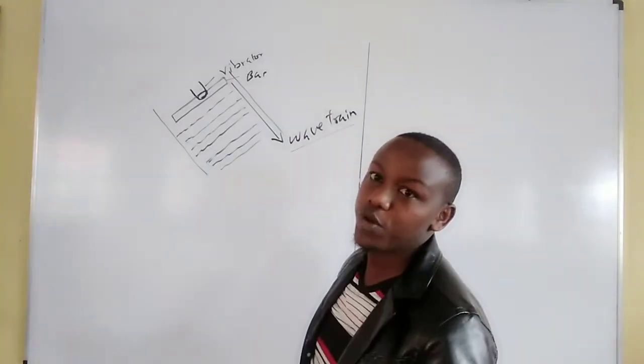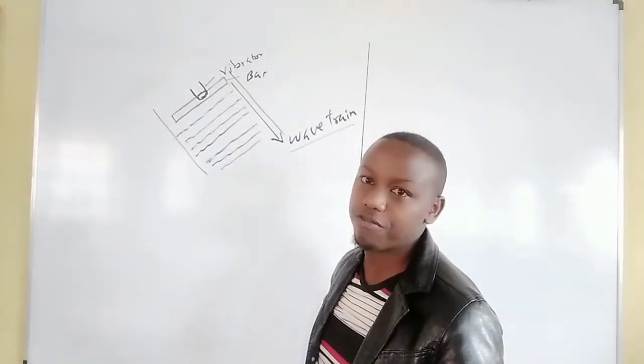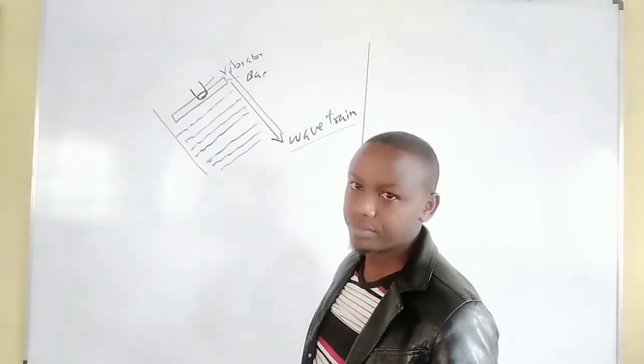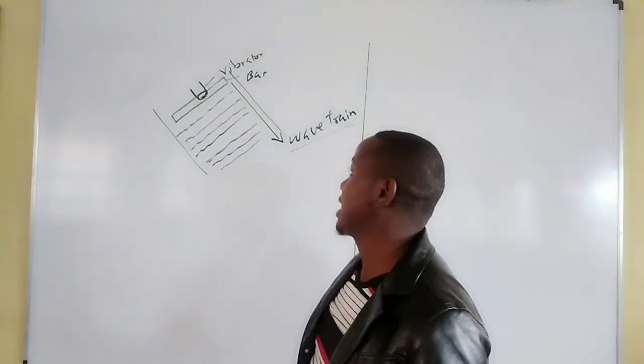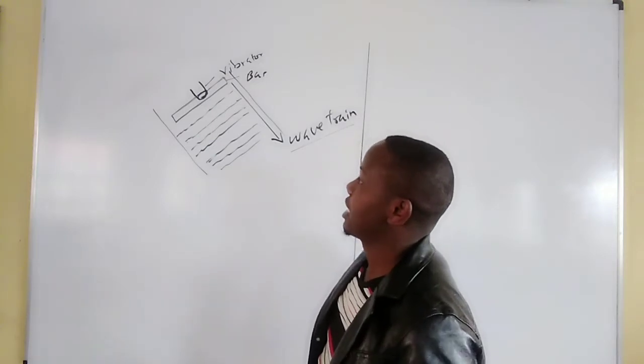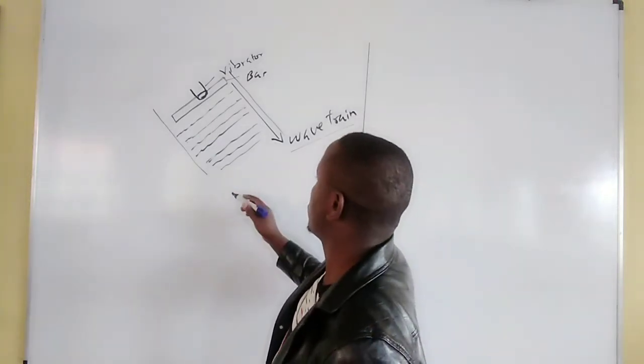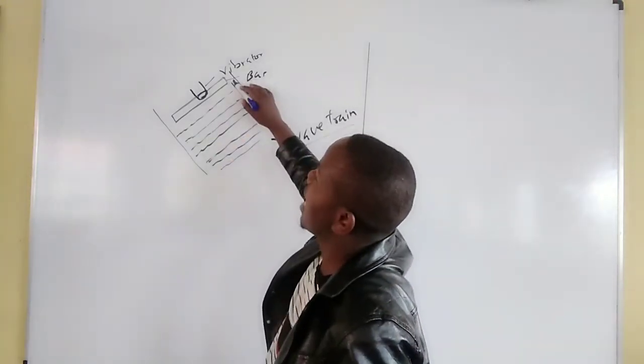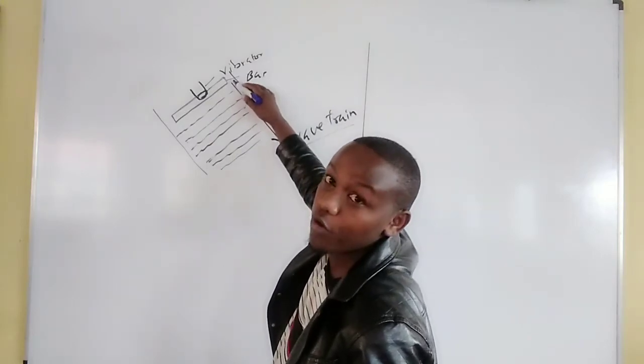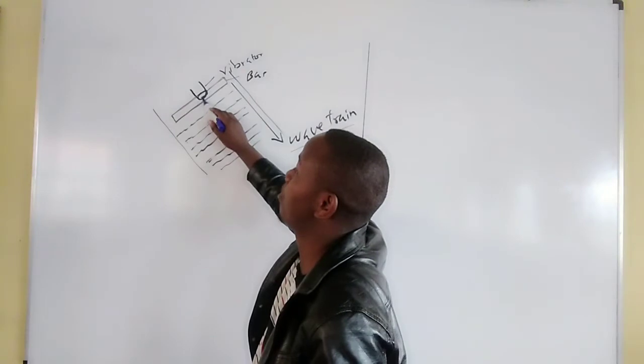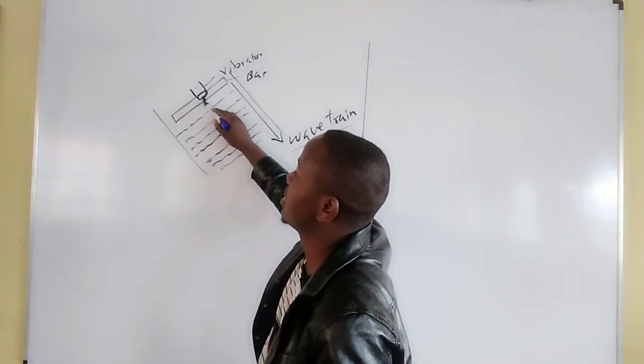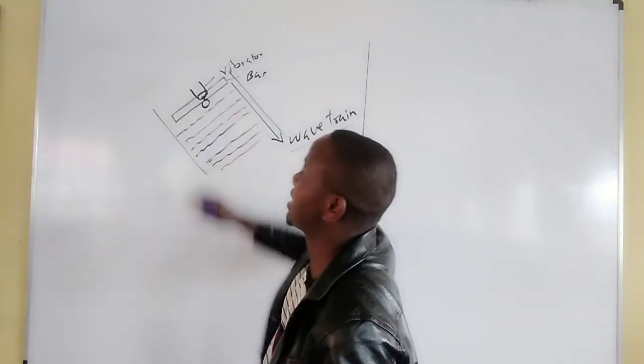But now sometimes we would like to study the behavior of circular waves. Therefore the circular waves are made to come out when alongside this or on this straight bar we attach a circular bob. Therefore you find a circular bob gets attached there.